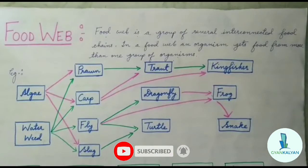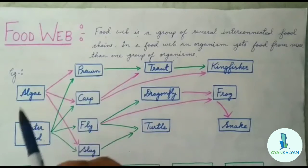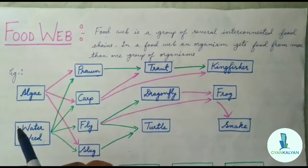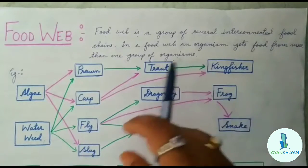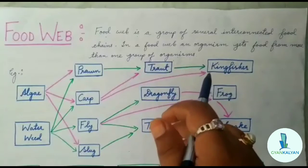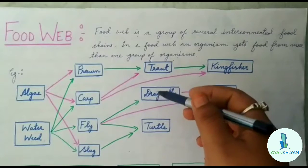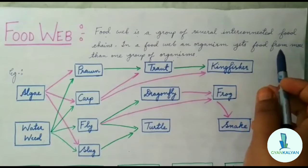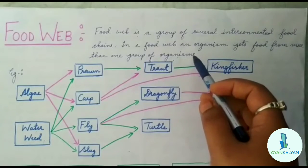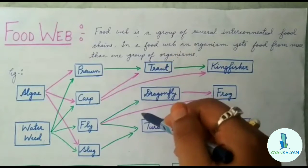Now what do you mean by a food web? A food web is a group of several interconnected food chains. In a food web, an organism gets food from more than one group of organisms. So what does food web mean? Food web means the interconnections of food chains — when one food chain is connected with another food chain, we call it a food web. In a food web, an organism gets food from more than one group of organisms.